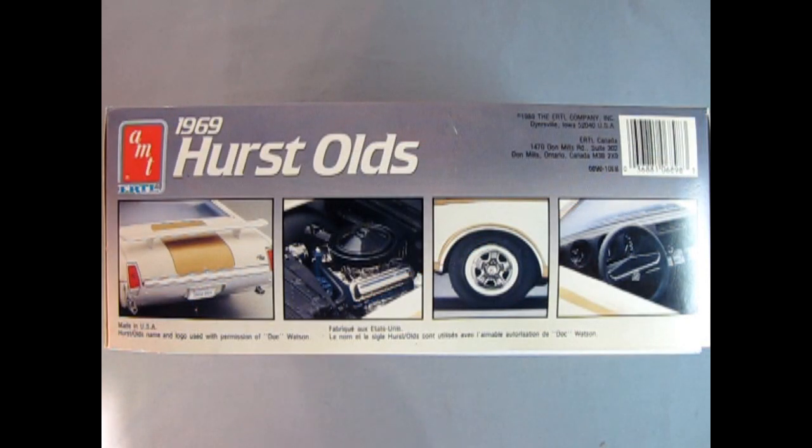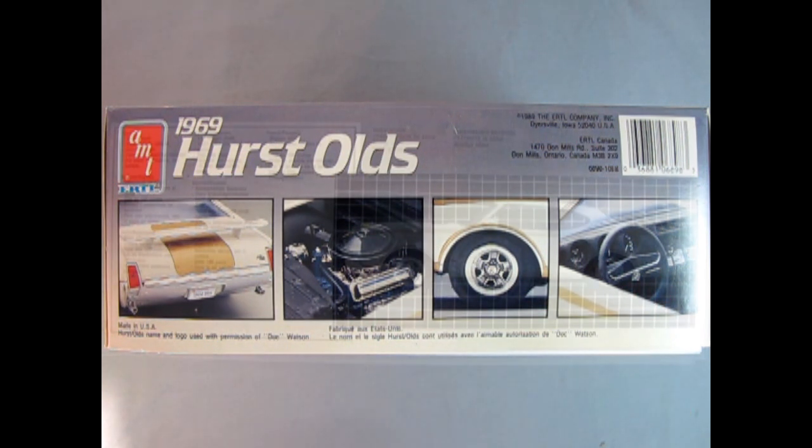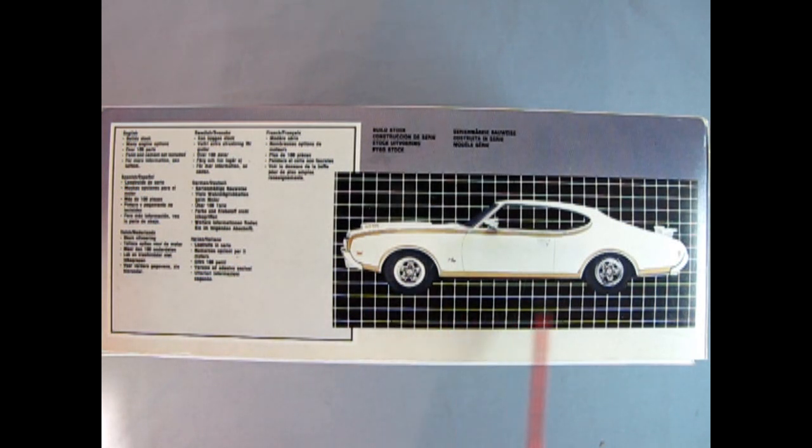On this side of the box we can see different photographs of the Oldsmobile including the rear three-quarters shot, the engine, the wheels and tires that we get, as well as the interior. And on this side of the box we get a side profile of the car as well as a write-up which I will include in the description down below.